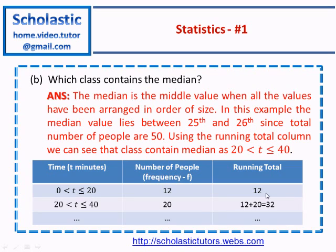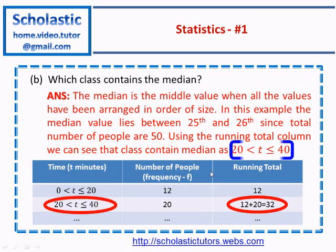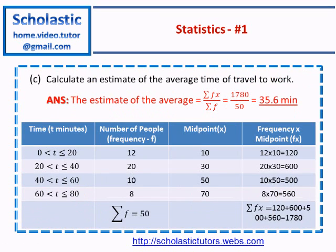Therefore, the 25th or 26th number lies between 32 and 12. So the median class is actually the class between 20 and 40 because the 25th and 26th numbers lie between 32 and 12.